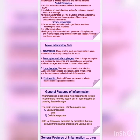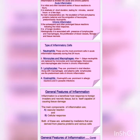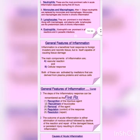Types of inflammatory cells: Neutrophils, Monocytes, Lymphocytes, and Eosinophils. First, the cells that arrive within 24 hours are Neutrophils. Then Monocytes and Macrophages arrive in 24 to 48 hours. Third is Lymphocyte and fourth is Eosinophil.